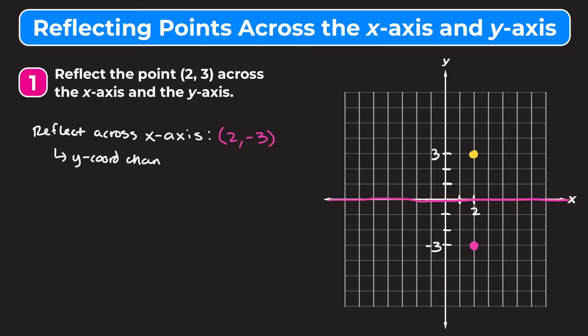Originally our y-coordinate was positive 3, but when we reflect it across the x-axis it becomes negative 3. The x-coordinate stays the same and the y-coordinate flips signs. That's the shortcut you can use if you don't actually want to graph it.